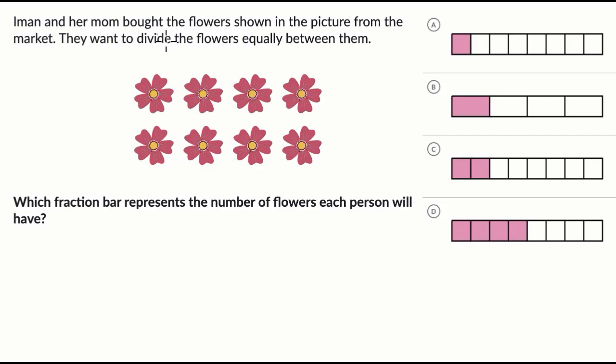We are told Iman and her mom bought the flowers shown in the picture from the market. These are the flowers here, there's eight of them. They wanna divide the flowers equally between them.